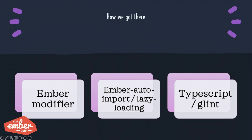There are really three pillars to this story. The first is using an Ember modifier — we actually started using a wrapper add-on, which I'll get into soon, and then converted to an Ember modifier. Then we were able to use Ember import to implement lazy loading. And finally, we converted from JavaScript to TypeScript and Glint.